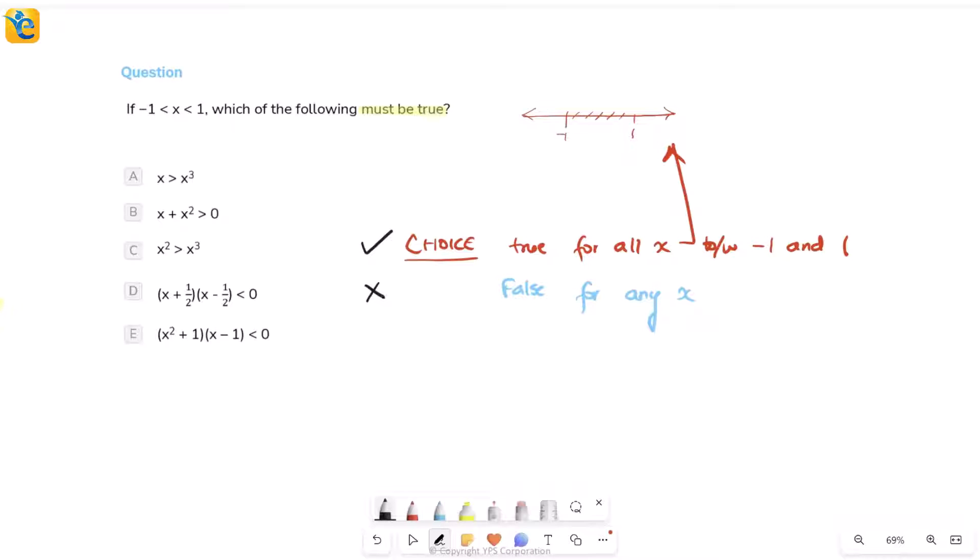So criteria very clear: this is your correct choice, this is your incorrect choice. It must be true for all x in this range to be the correct choice. And if it is false for even one value of x in this range, then it will be the incorrect choice. So very important to break this down nicely.